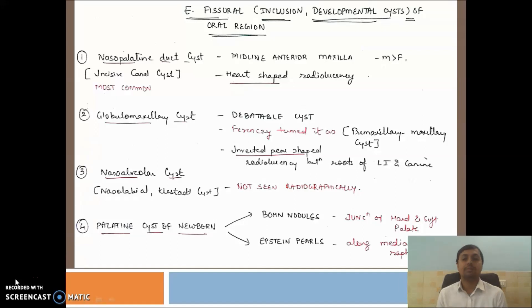On radiography, it appeared as a heart-shaped radiolucency in the region of incisors. One of the features of nasopalatine duct cyst, on aspiration there will be a clear or straw-colored fluid. The tooth will be vital, and sometimes pain can also be there. How you will treat this? You have to go for enucleation of the cyst. Either you can use a buccal approach or a palatal approach.